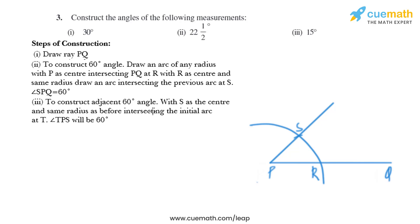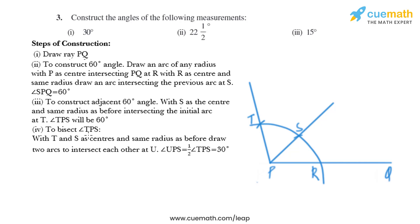To construct an adjacent 60-degree angle: with S as the center and same radius as before, draw an arc intersecting the initial arc at T. We get angle TPS equal to 60 degrees. We put the compass at S, draw another arc intersecting the initial arc, name it T, then join T and P to confirm angle TPS as 60 degrees.